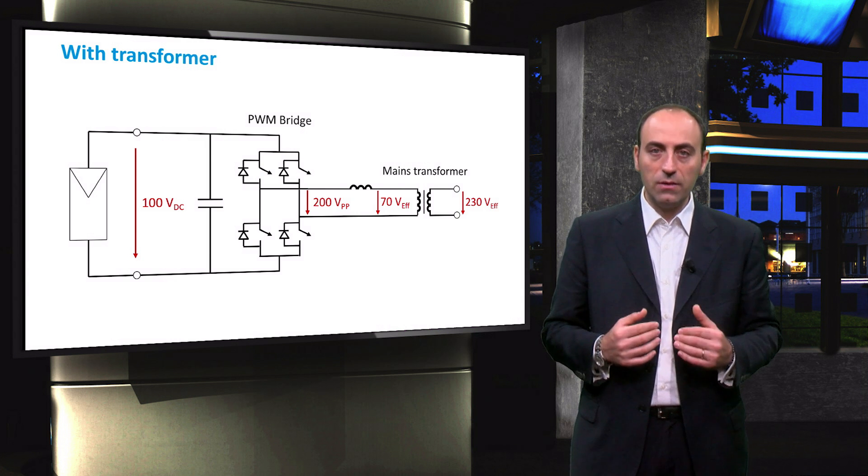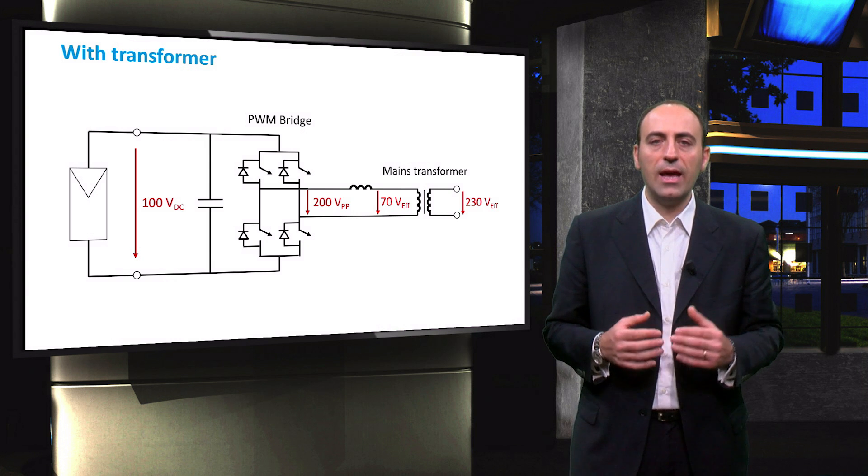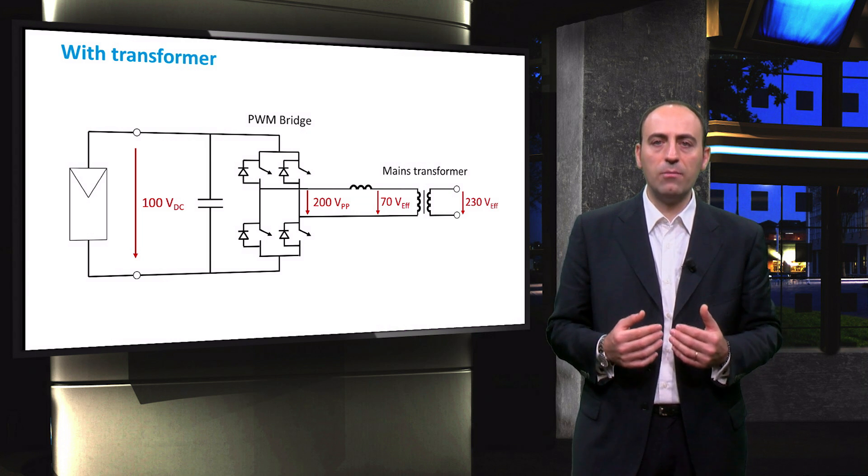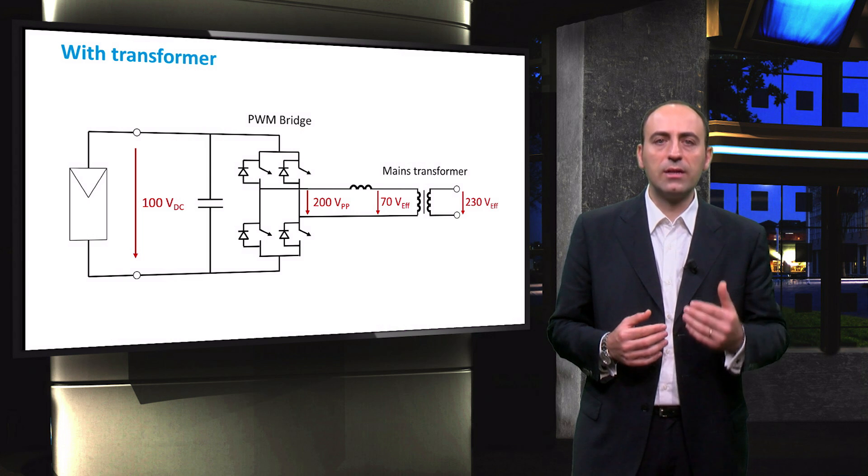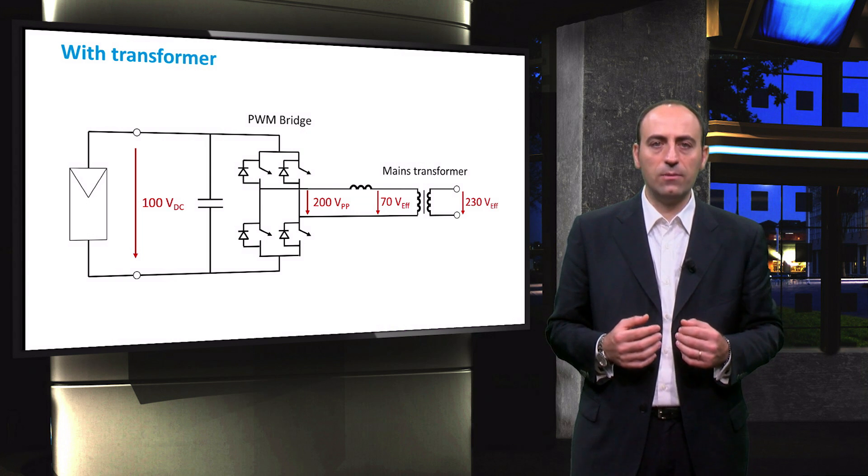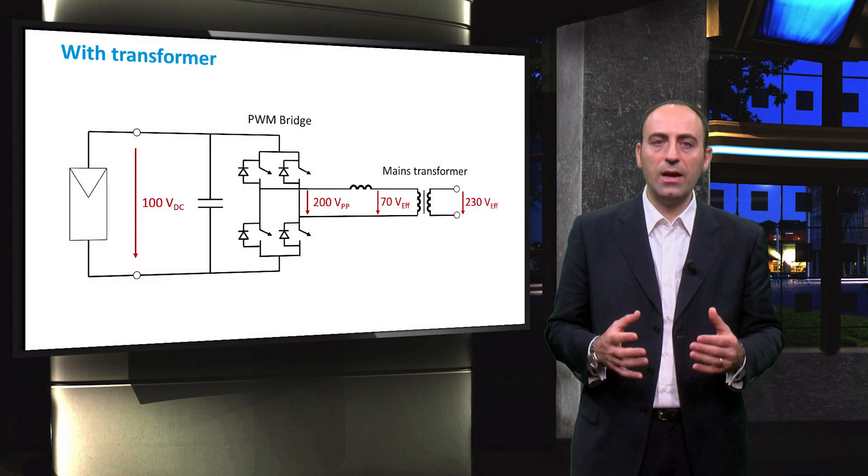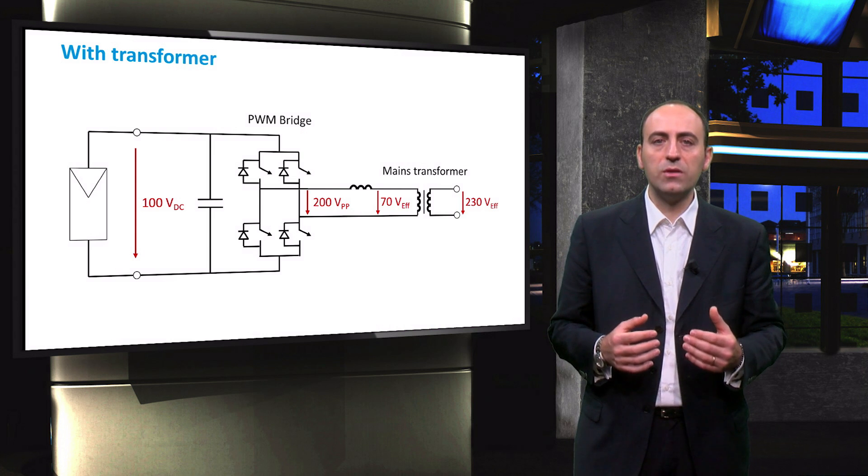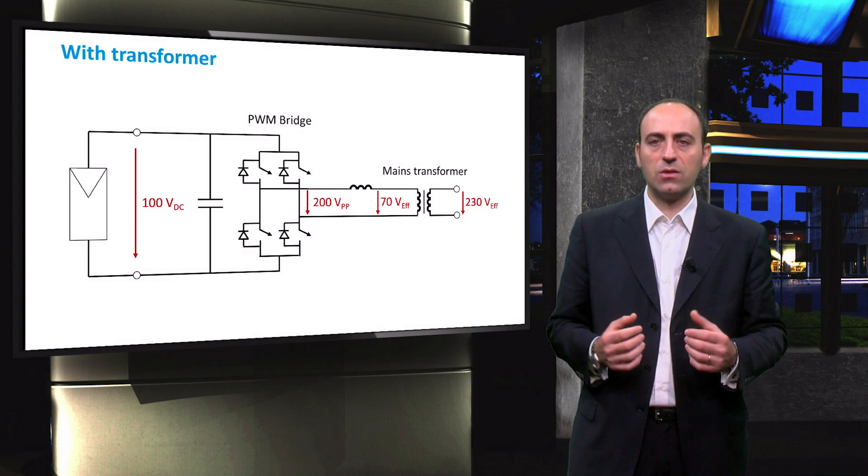As an alternative to the 50Hz transformer, a high-frequency transformer can be used to permit galvanic isolation of the DC and the AC side. Since the frequency is higher, the transformer can also be smaller by some factors and therefore cheaper than the mains transformer.